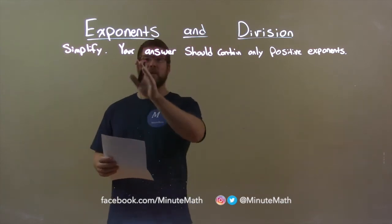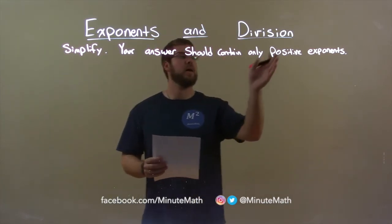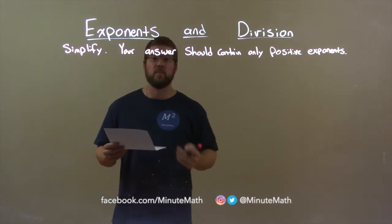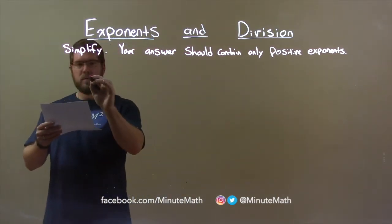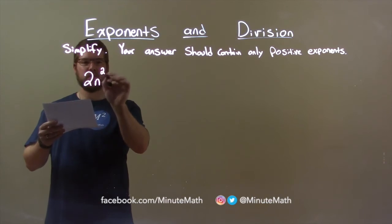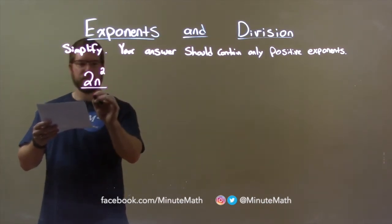To simplify, your answer should contain only positive exponents. So, if I was given this problem, 2n squared over n.